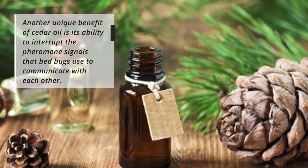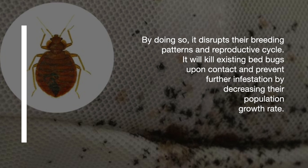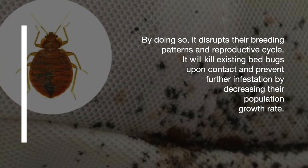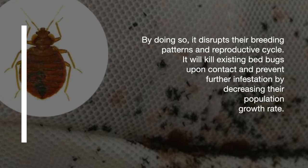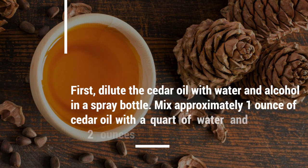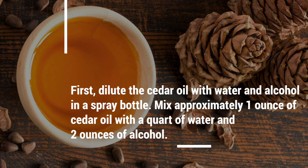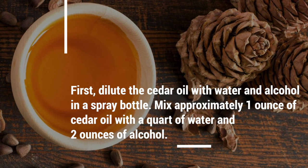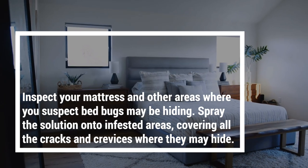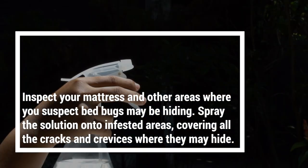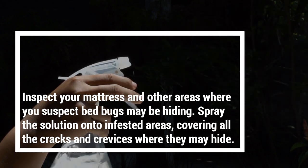Another unique benefit of cedar oil is its ability to interrupt the pheromone signals that bed bugs use to communicate with each other. By doing so, it disrupts their breeding patterns and reproductive cycle. It will kill existing bed bugs upon contact and prevent further infestation by decreasing their population growth rate. Dilute the cedar oil with water and alcohol in a spray bottle — mix approximately one ounce of cedar oil with a quart of water and two ounces of alcohol. Inspect your mattress and other areas where you suspect bed bugs may be hiding, then spray the solution onto infested areas, covering all the cracks and crevices where they may hide.